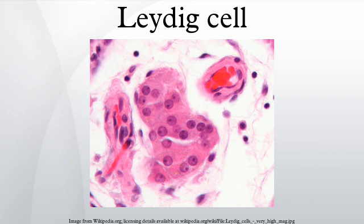Leydig cells, also known as interstitial cells of Leydig, are found adjacent to the seminiferous tubules in the testicle. They produce testosterone in the presence of luteinizing hormone. Leydig cells are polyhedral in shape, display a large prominent nucleus, an eosinophilic cytoplasm and numerous lipid-filled vesicles.